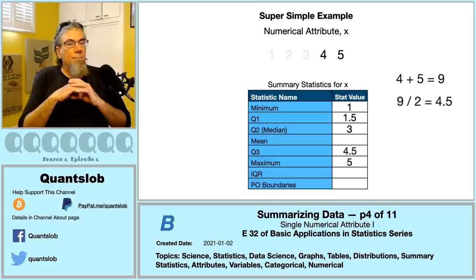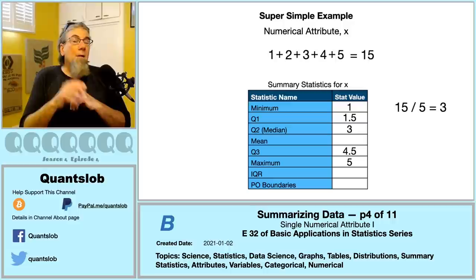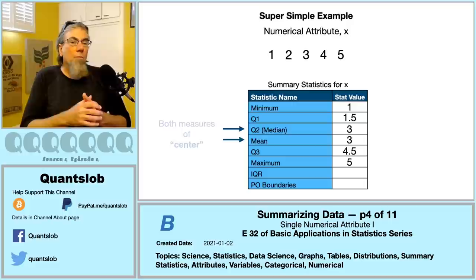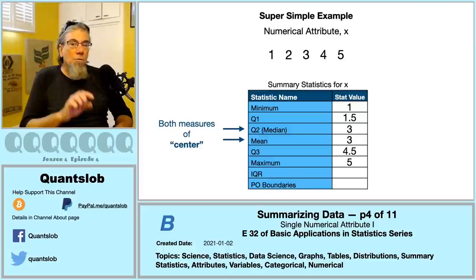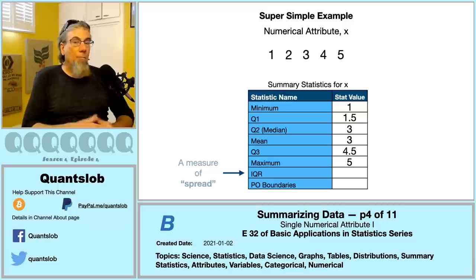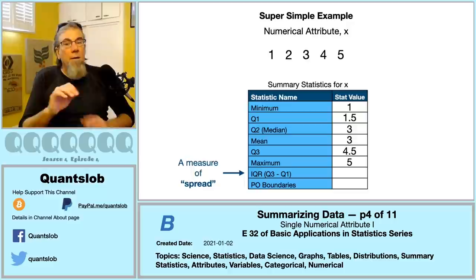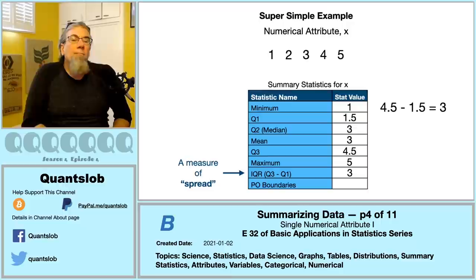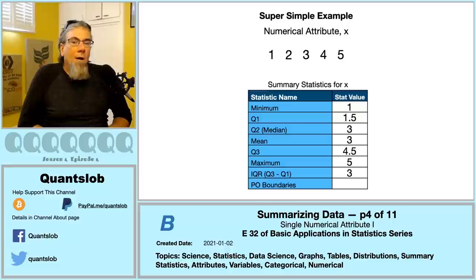The mean is the arithmetic average — the sum of all our values divided by the total number of values, and since addition is commutative, the order doesn't matter. Both the mean and Q2 (the median) are measures of center — in our simple example they happen to both equal 3. The IQR is a measure of spread — how varied or diffuse our values are. Calculating it is straightforward once we have Q1 and Q3: IQR = Q3 − Q1.